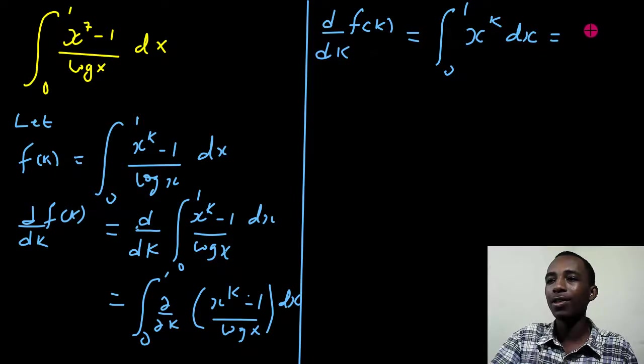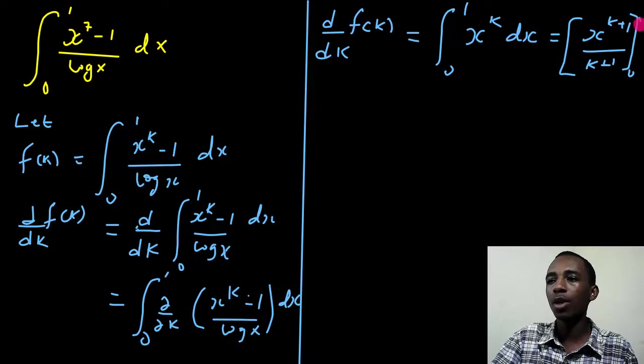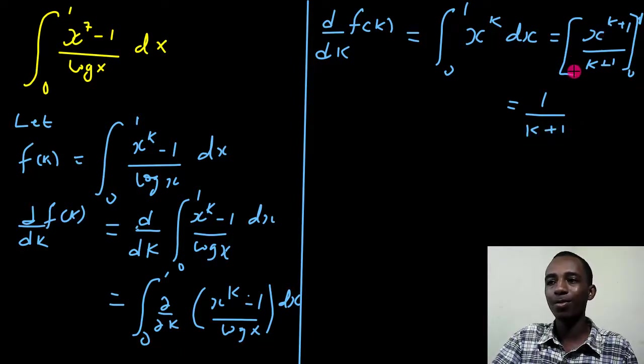if you integrate this, that's x to power k plus 1 divided by k plus 1. This is evaluated with limits from 0 to 1, right? And that's actually going to be, if I put 1 here in instead of x, I'll have 1 over k plus 1. And if I put 0 here, that's going to be a 0.